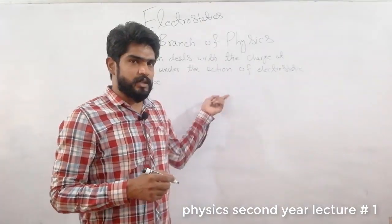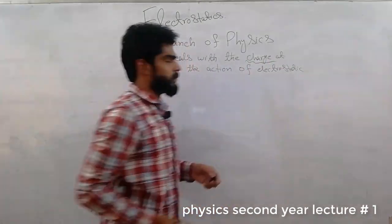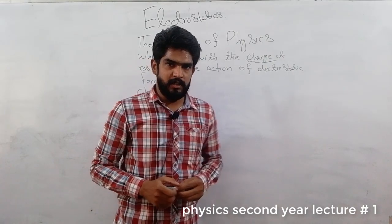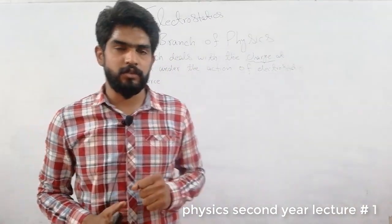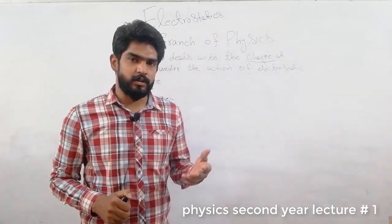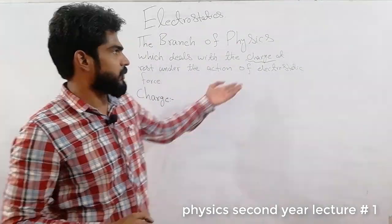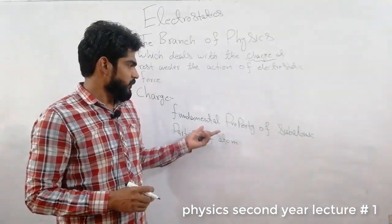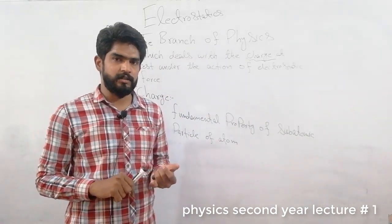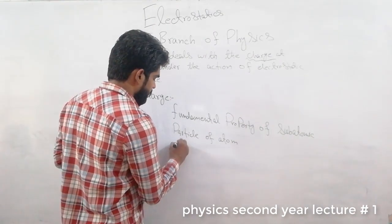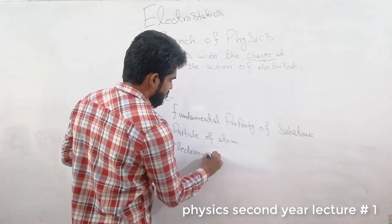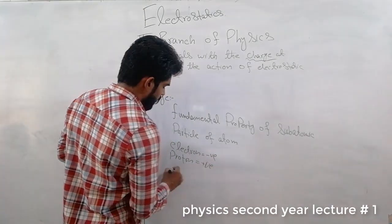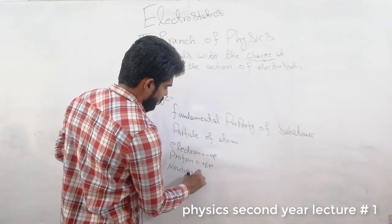Let's go to the topic of charge. What is charge? Charge is the fundamental property of sub-atomic particles of atoms. There are three types of sub-atomic particles: Electron, Proton, and Neutron. Electron is negative, Proton is positive, and Neutron is neutral — it doesn't have any charge.